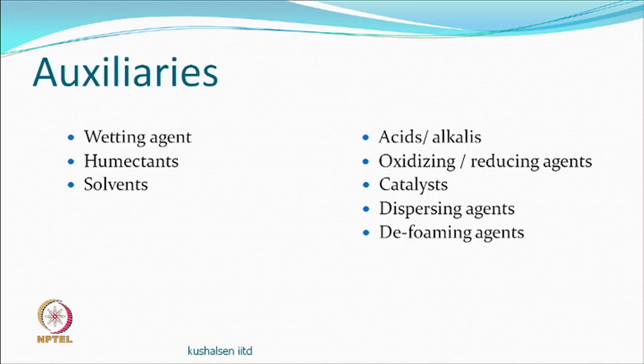Unless the dye is in molecular form, it will be very difficult for it to penetrate and diffuse, unless we are talking about pigments. Other auxiliaries depend on what type of dye you want to use. For example, if the dye is an acid dye you may require acids in the printing paste. If it is a reactive dye, which fixes in an alkaline medium, you may require alkalies. If it is a vat dye, you may have oxidizing or reducing agents as auxiliaries. For oxidation colors, catalysts may be used.